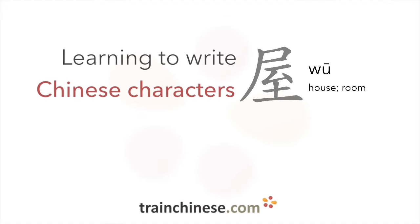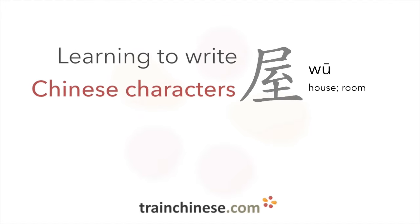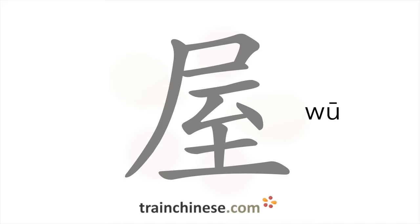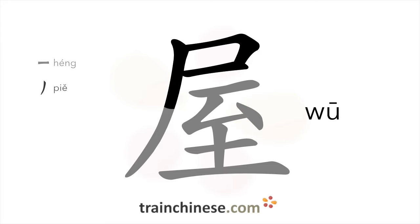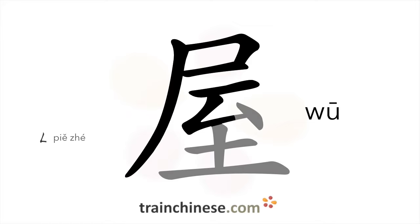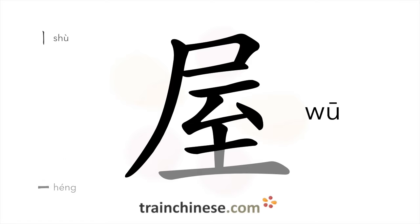Welcome to this TrainChinese character video. This character has nine strokes: 横折, 横, 撇, 横, 撇, 横, 撇折, 点, 横.